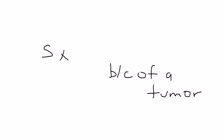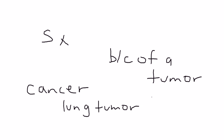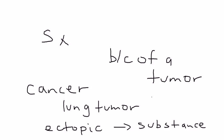Let's say you have some sort of cancer in the body — a tumor of the lung, for example. What happens is, not always but often, the body produces a substance in a location other than normal. When you have something produced in a location other than normal, it's called ectopic location. And that substance produces a wide variety of symptoms. This can happen in many types of cancers.